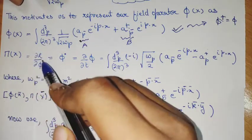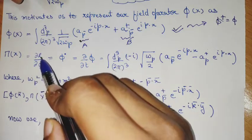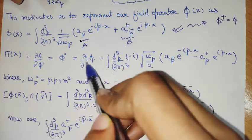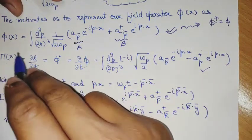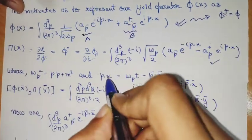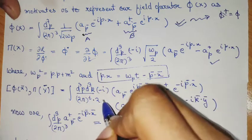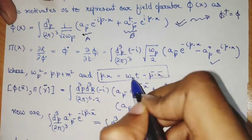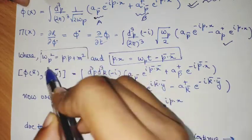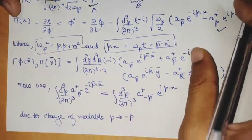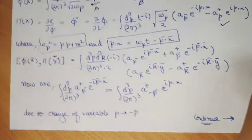With this we can find the conjugate momentum using the simple definition ∂L/∂φ̇. We plug in the Klein-Gordon Lagrangian to get π(x). We see that there is φ as a function of x and π as a function of x. The dot product p·x is a four-vector dot product using the Minkowski metric (+1, -1, -1, -1), and ω_p² is dependent on p.